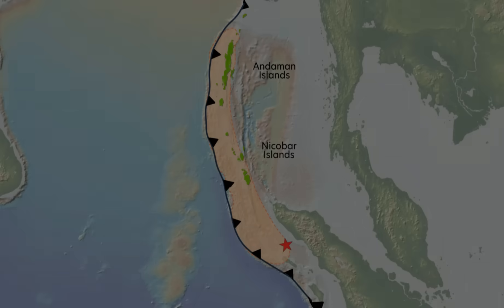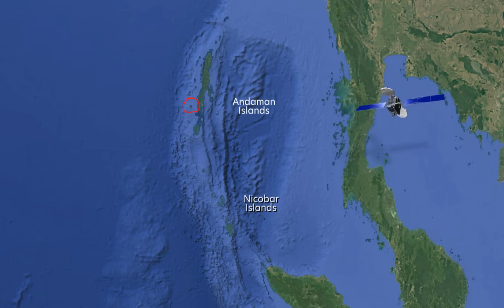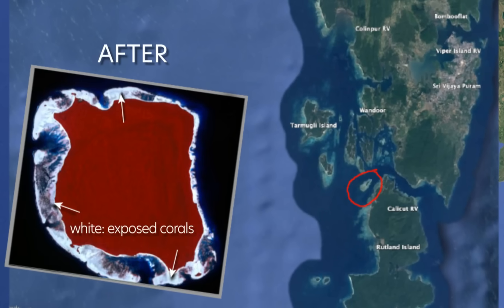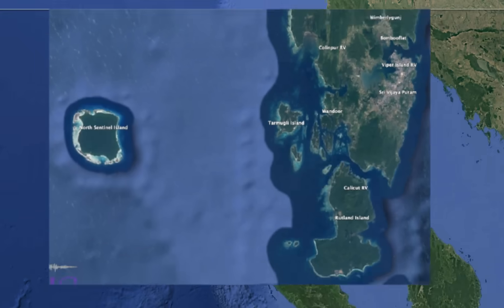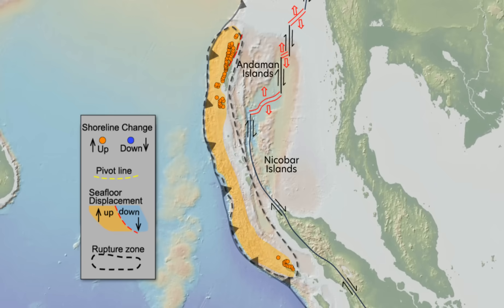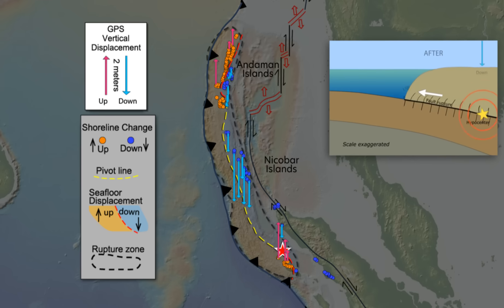A variety of observations document vertical displacements caused by the earthquake. In the Andaman and Nicobar Islands, satellite images show some fringing coral reefs were raised above sea level while others sunk. North Sentinel Island was uplifted over the earthquake, while Rutland Island only 40 kilometers east sank. On the northwest shore of Simeulue Island, this coral head was uplifted 1.3 meters. Plotting shoreline changes along the rupture zone locates the line between uplifted and down-dropped sites passing through the Andaman Islands and west of the Nicobar Islands. GPS observations document how islands west of this pivot line uplifted by almost 2 meters, while the Nicobar Islands subsided by up to 3 meters. This tilting of the seafloor and islands riding on the upper plate is a signature of a great megathrust earthquake.